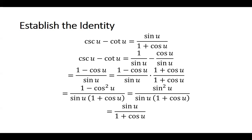So start with one side and just start manipulating it until you get the other side. Start with the most complicated side, start by turning things into sine and cosine because they're easier to work with, and work your way through using identities.